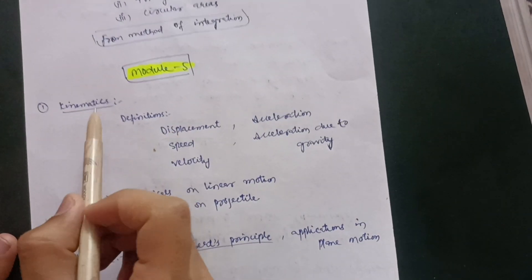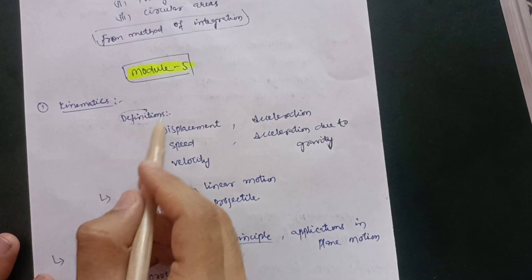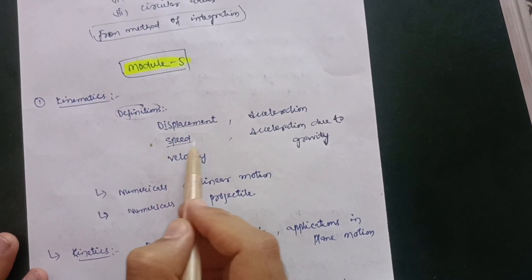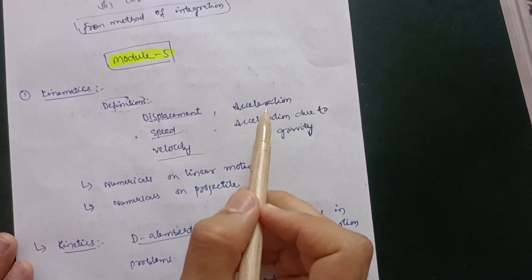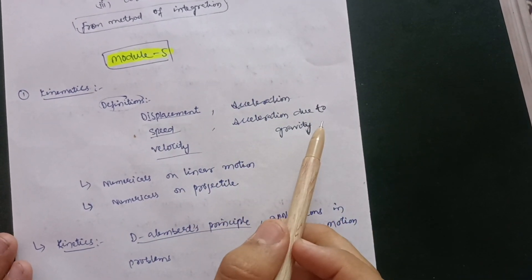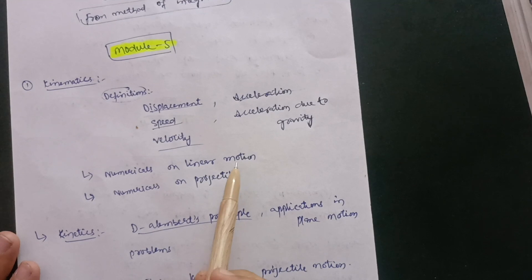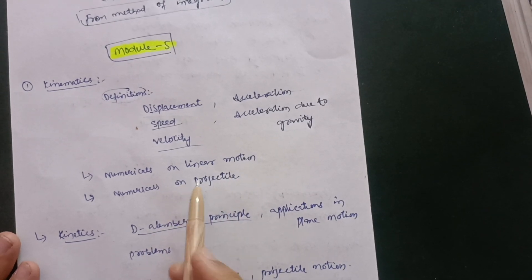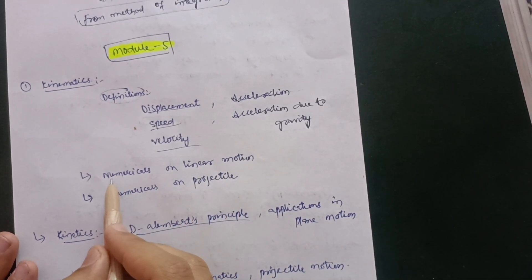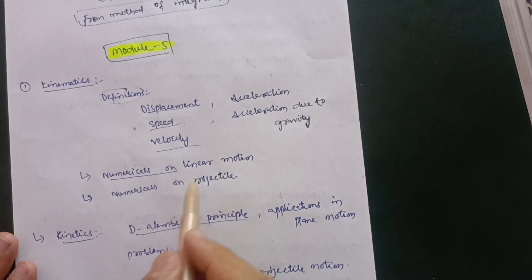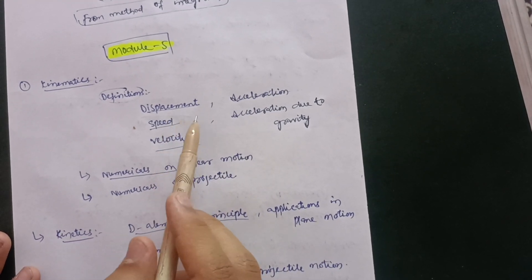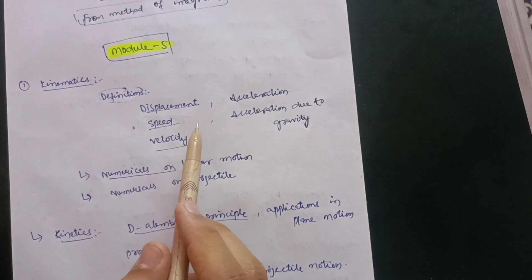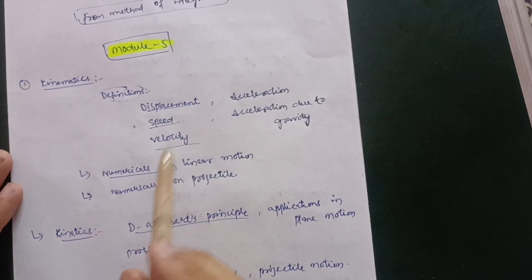Module 5 is the kinematics part. You need to cover definitions like displacement, speed, velocity, acceleration, and acceleration due to gravity. Also cover numericals on linear motion and numericals on projectile motion. These definitions will definitely appear in the examination.